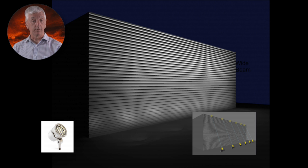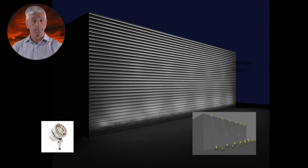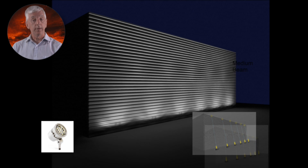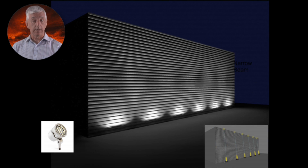Shadows here will be soft. Moving the lights closer increases the strength and depth of the shadows. But as we get really close to the wall, the individual spotlights start to create scallops over the surface. Now the lighting is imposing its own structure over our wall.